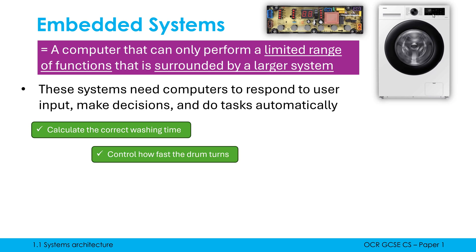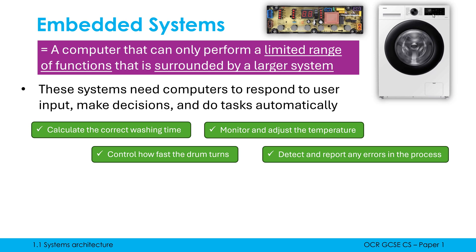You could be asked in an exam to give examples of the sort of things an embedded system is used for. For a washing machine, here are some possible tasks: it will calculate the correct washing time and might adjust that automatically based on how heavy your washing is; it will control how fast it turns and might adjust that if it detects your washing is getting quite dry; if the water is getting too cold, it will adjust it using sensors. The computer will also oversee the whole process — detecting errors, clothes stuck in the door, or limescale building up, and reporting that to the user. All of these tasks are done with limited user involvement and would need to be carried out by a computer which can execute instructions.